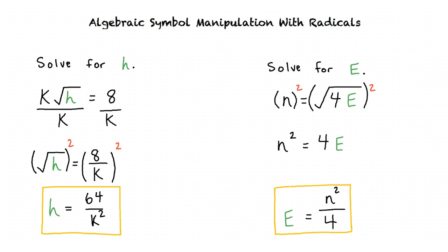In order to solve for the specified variable in an equation containing radicals, we can begin by squaring both sides of the equation. Once there is no longer a radical in the equation, we can use algebraic properties to isolate the variable and find the final answer.